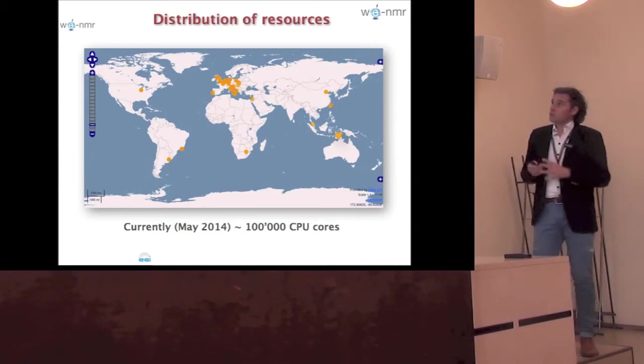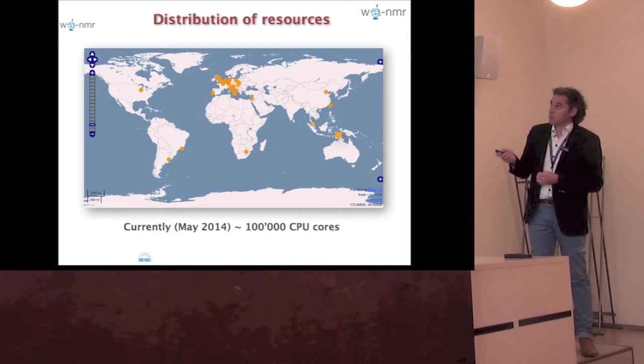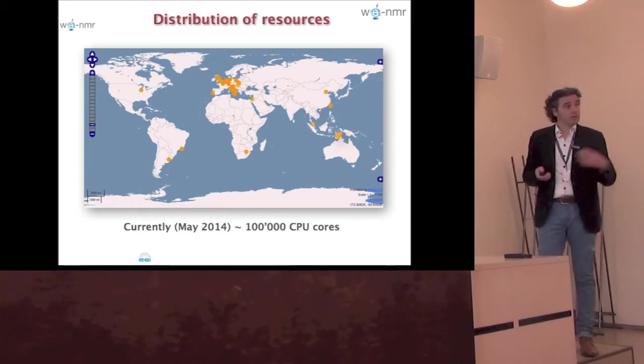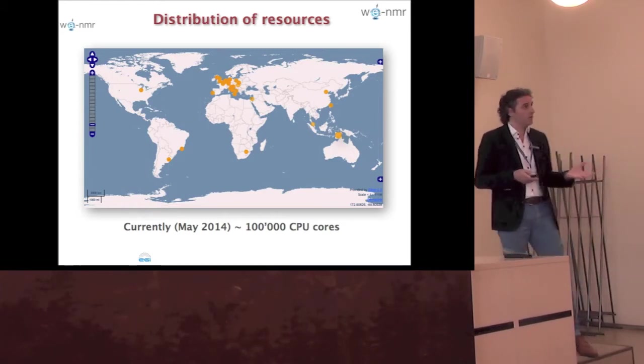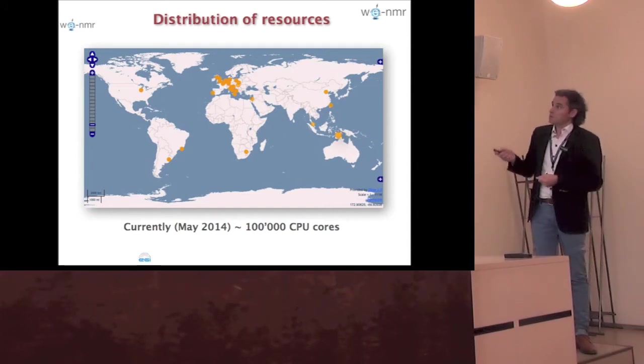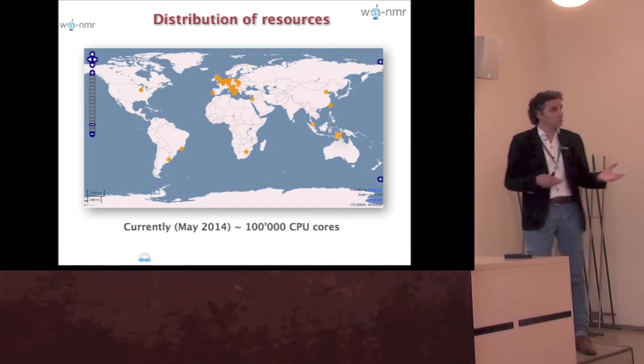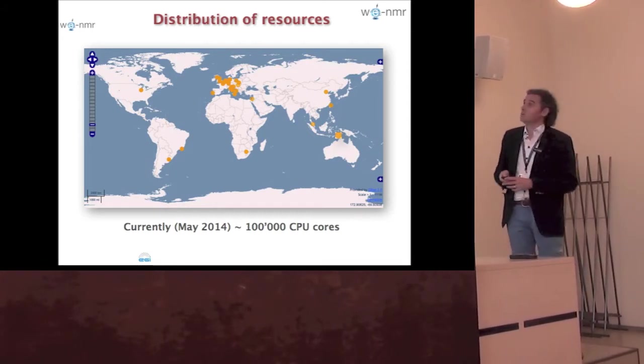Distribution of resources: where are we sending the jobs? You see that we are mainly supported in Europe but also have support in South Africa, Latin America, the US. We are sending jobs across the Atlantic to Open Science Grid resources in a transparent manner, to Asia as well, and also in a transparent manner to desktop grid resources.